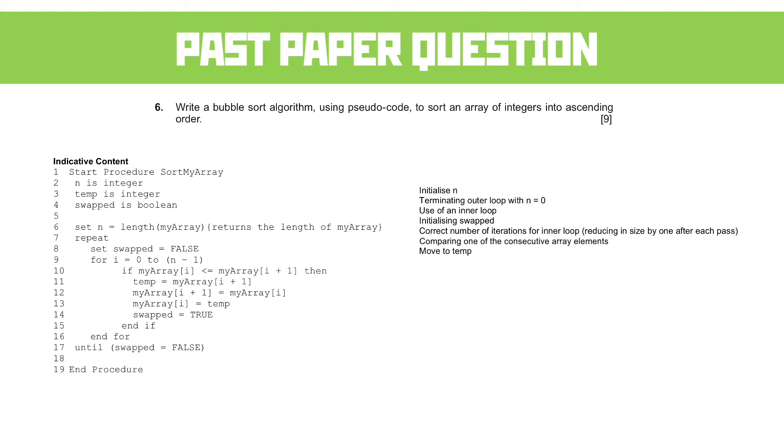A mark for comparing the consecutive array elements, a mark for having a temp value because we're swapping the value of two items, which means we need a temp value so you don't accidentally lose it. A mark for swapping the array elements and updating the swap values.